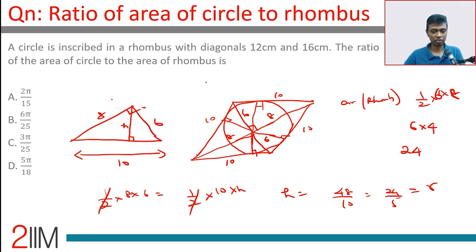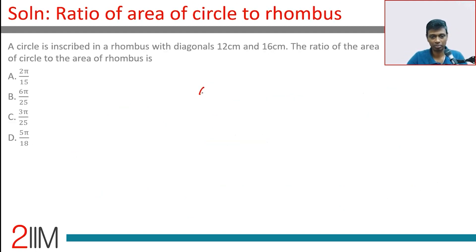Area of the circle is pi r squared, so this is pi times 24 by 5 into 24 by 5. That is the area divided by 24.